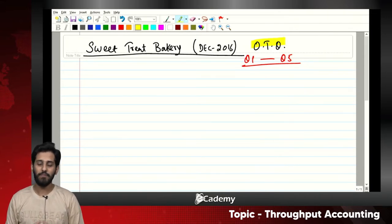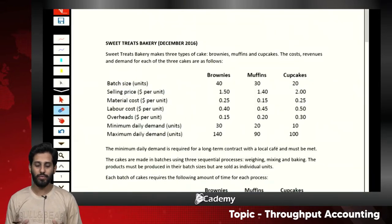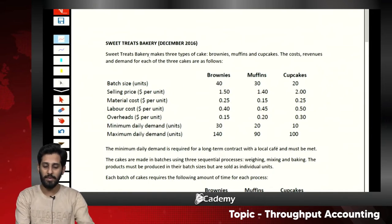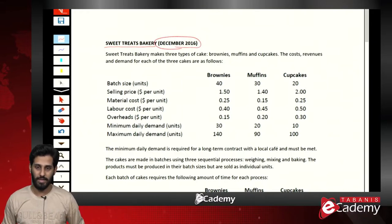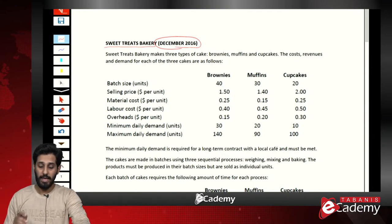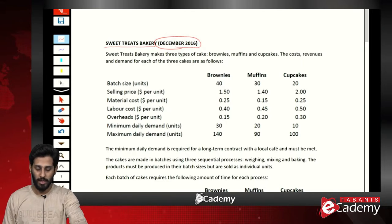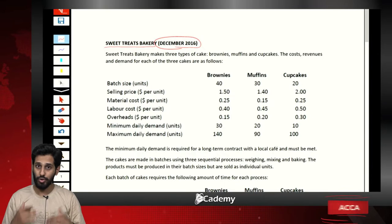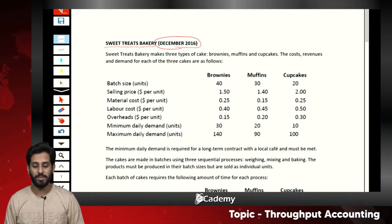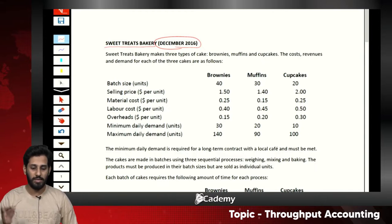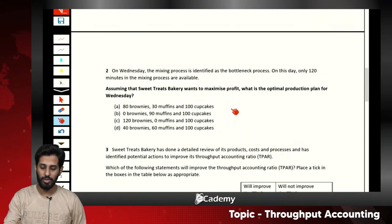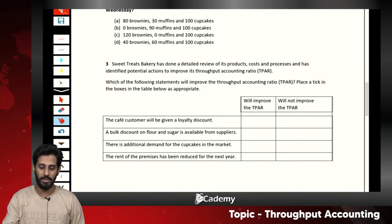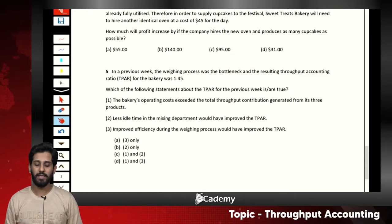In this OTQ there are five MCQs: questions one through five. The question is Sweet Treat Bakery, examined in December 2016. There are three main products. This is one of the challenging questions of throughput accounting. The five MCQs include two theoretical assessment questions — question three and question five.